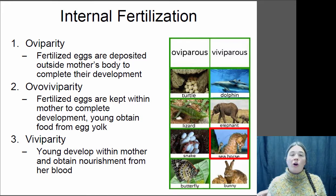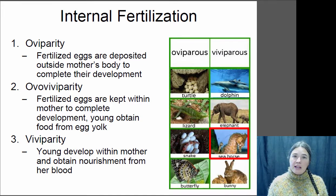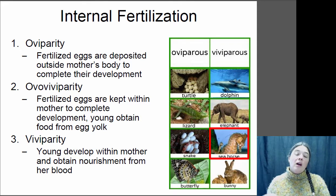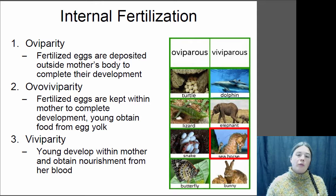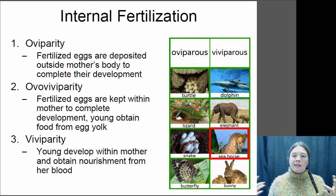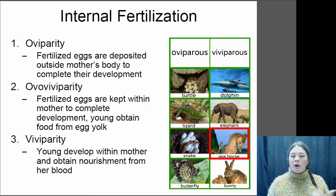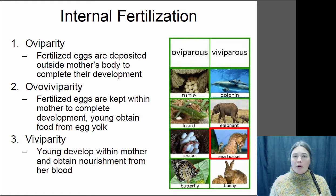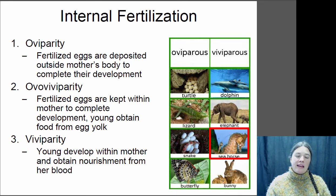If you have internal fertilization, there are a couple of different ways you can proceed with the development of offspring. You can be what's called oviparous. Oviparity is when fertilization occurs inside the female but then the fertilized eggs are deposited outside the mother's body and development happens outside the mother's body. So anything you think of on land that's laying an egg — turtles, lizards, butterflies, birds — those are all oviparous animals. Fertilization occurs inside and the egg is laid.